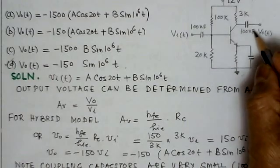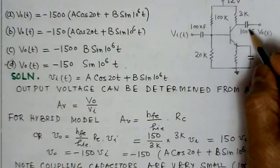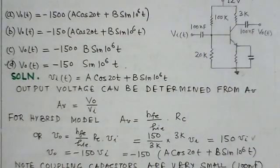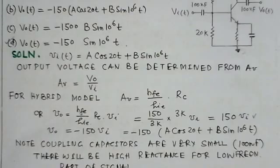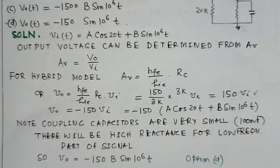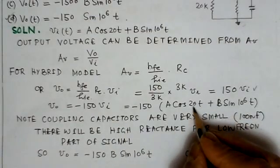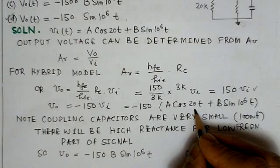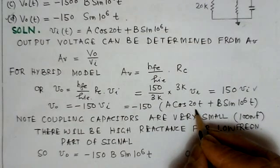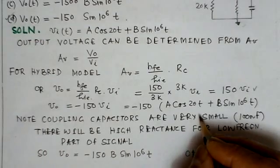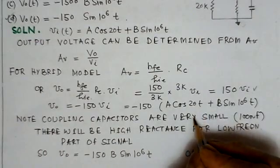Now we use the coupling capacitor values. We observe that these coupling capacitors are very small values. Small values of coupling capacitors means that the low frequency component will have a very high reactance, because the frequency is low and the capacitance is also low, since the reactance is 1/(ωC).